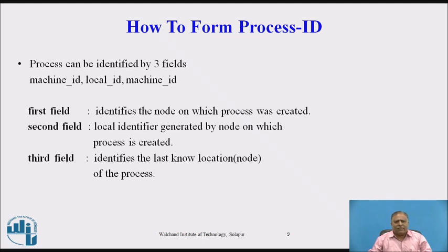A process can be identified by three fields: machine ID, local ID, and a third machine ID field. The first field identifies the node on which the process was created. The second field is the local identifier generated by that node. The third field identifies the last node or current location of the process. The values of the first two fields never change during the lifetime of the process, but the third may change. This is also known as link-based process addressing. The kernel of the sending machine delivers the message to the machine whose ID is specified in the third field of the receiving process address. Disadvantage: there is significant overhead in locating a process if it has migrated several times, and if an intermediate node on which the process once resided is down, it is not possible to locate the process.